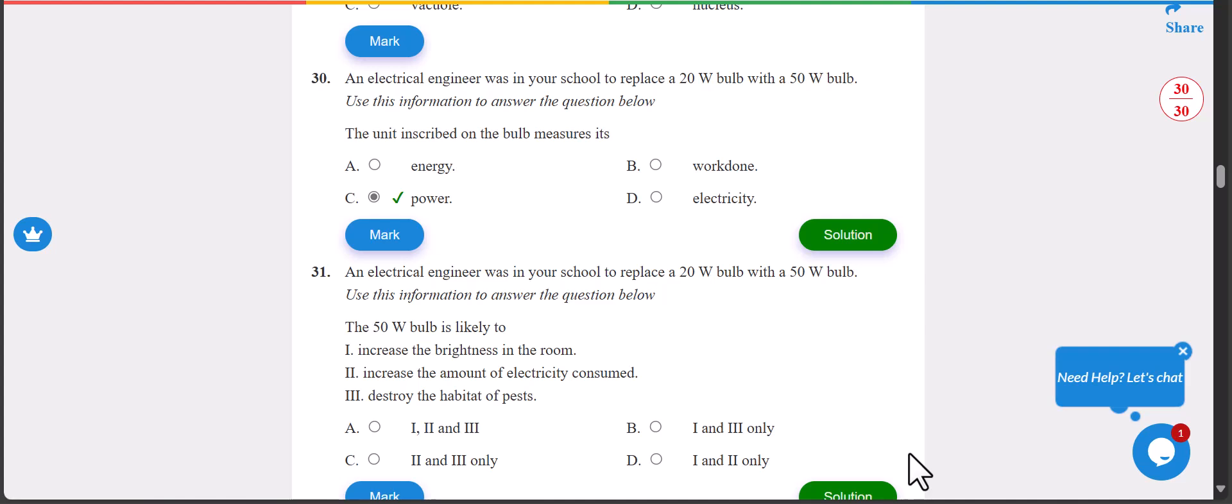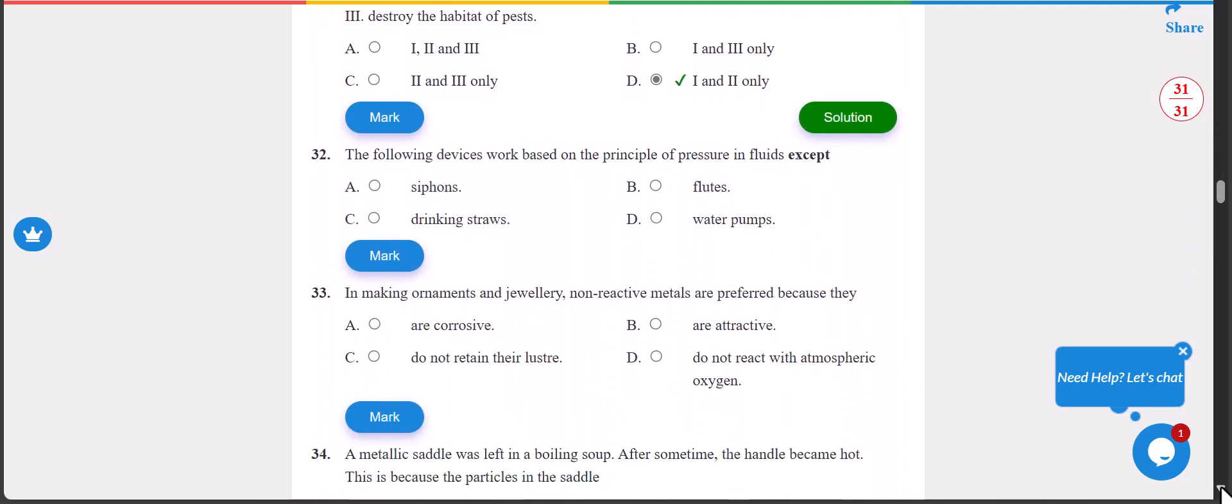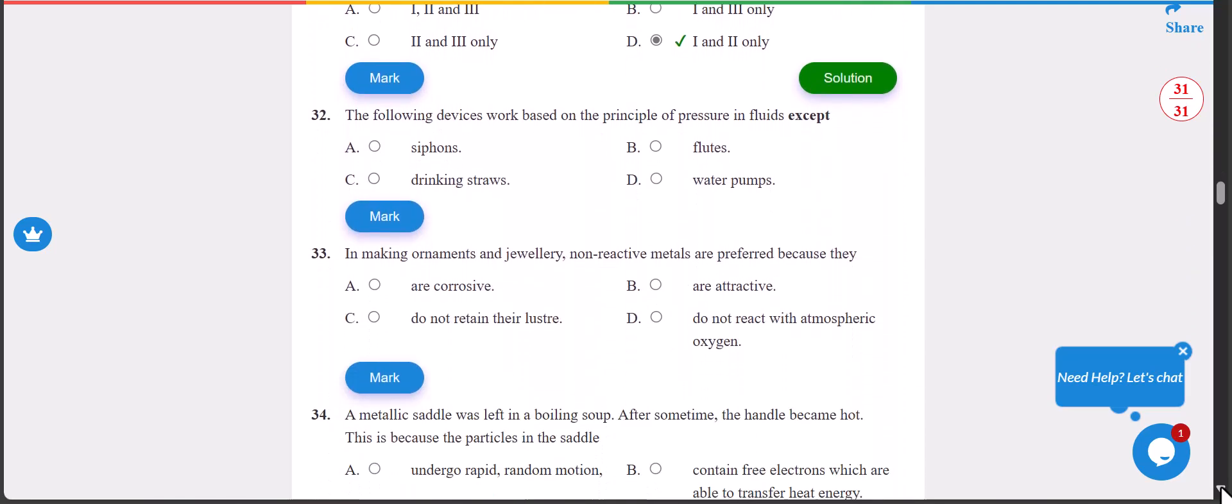Number 31: an electrical engineer was in your school to replace the bulb with 50 watt bulb. The 50 watt bulb is likely to do what? The answer is D - I and III. It says increase the brightness in the room obviously when you turn it on, and destroy the habitat of pests because it is very bright. The answer is D.